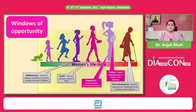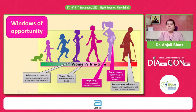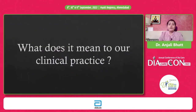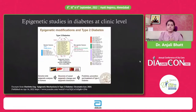We have windows of opportunity at every level of development in men and women. At adolescence, puberty has to be normal. In youth, if we control obesity; in pregnancy, if we control hyperglycemia, we change fetal programming by changing the hyperglycemia status of the mother. During menopause, if we treat these chronic disorders, we are reducing the chronic complications that arise. It's a continuous process — never say it's too late to modify your genes and epigenetics.